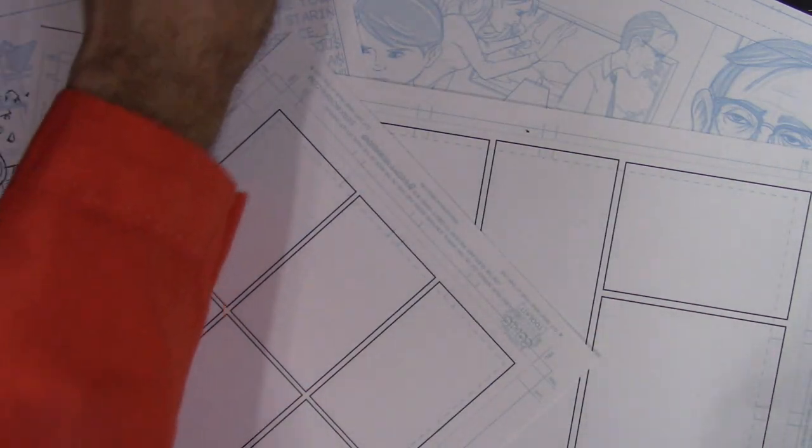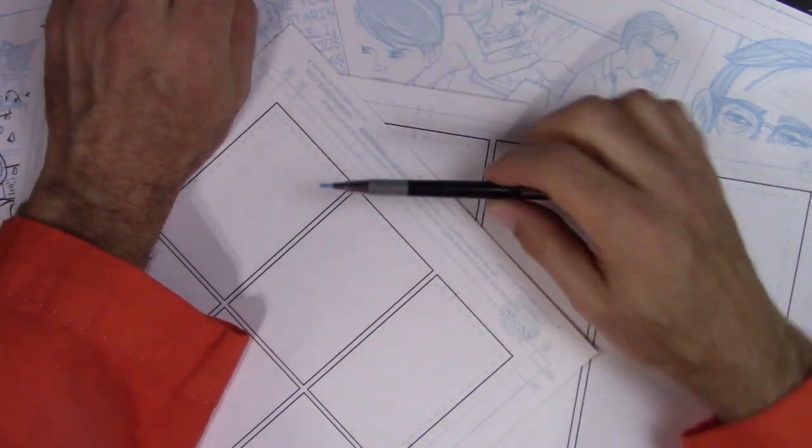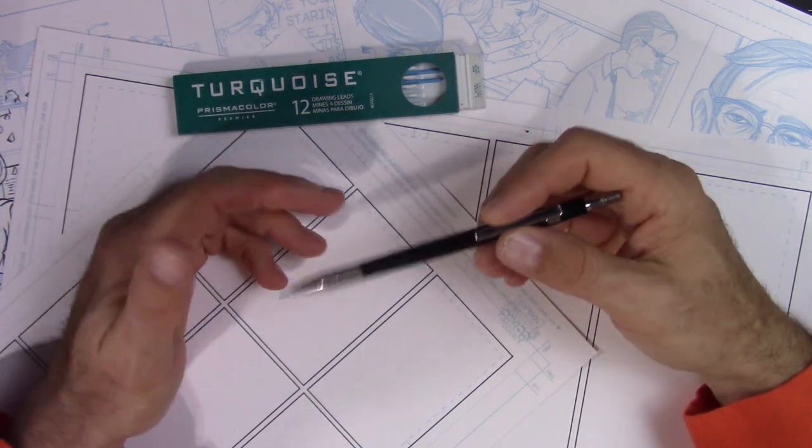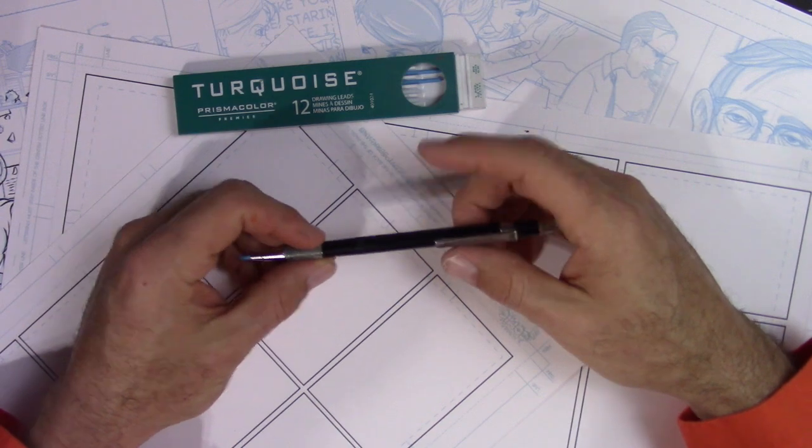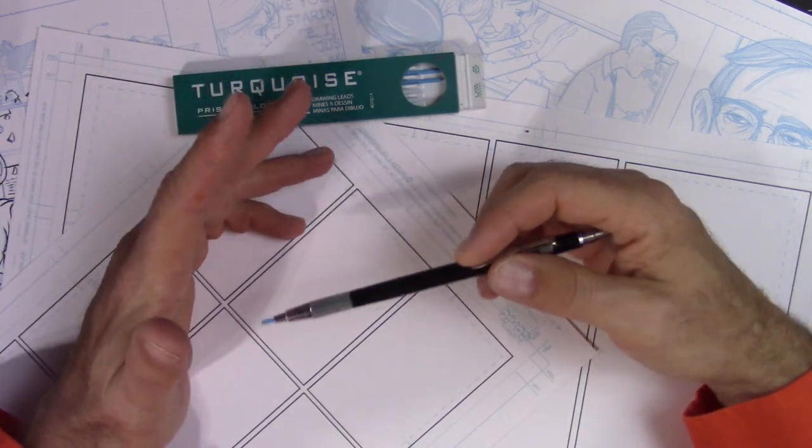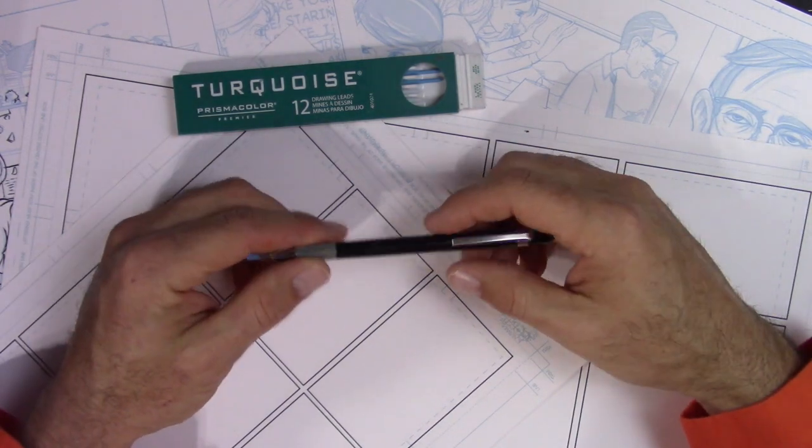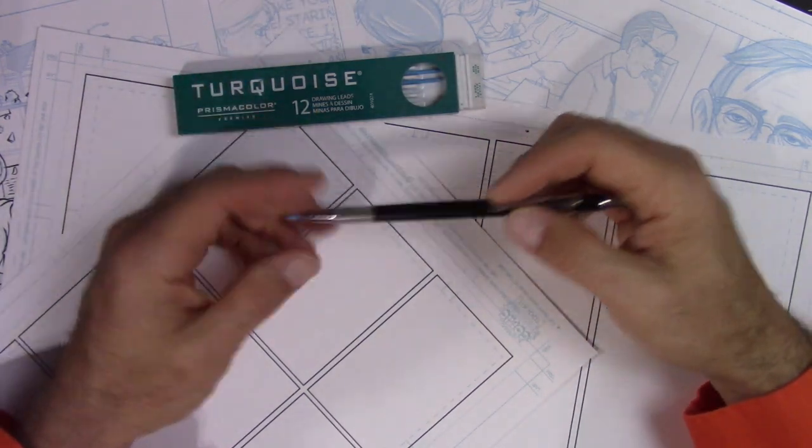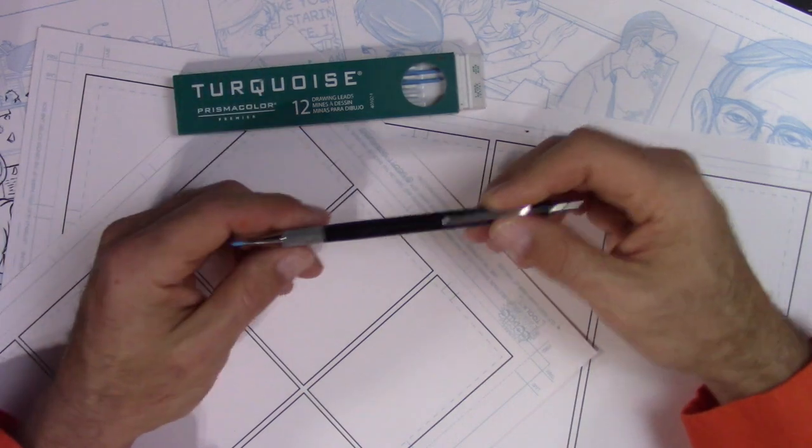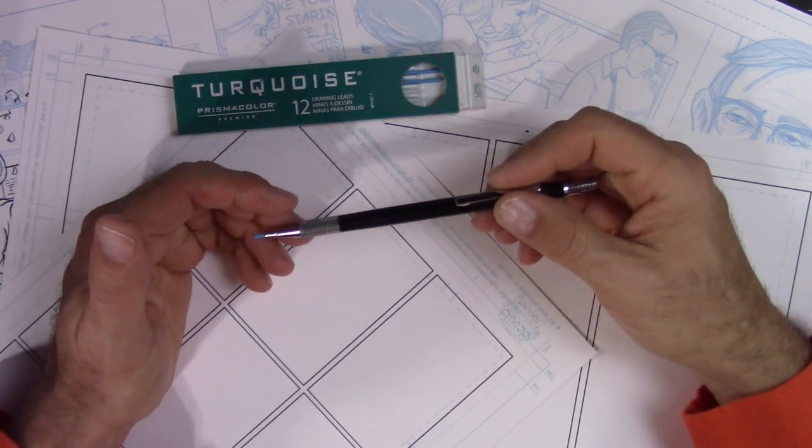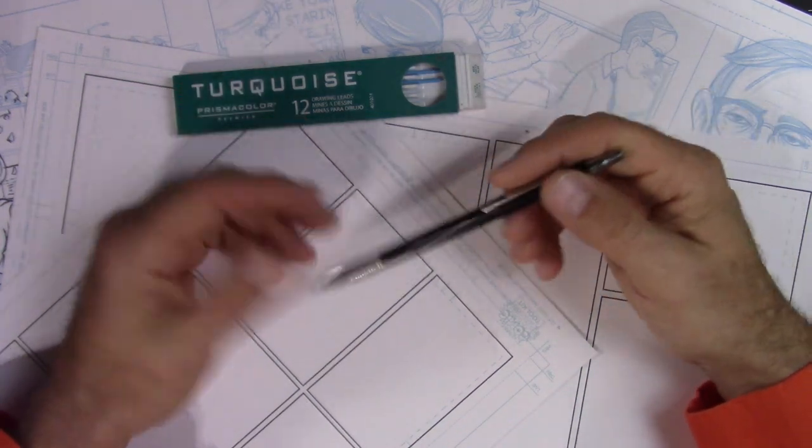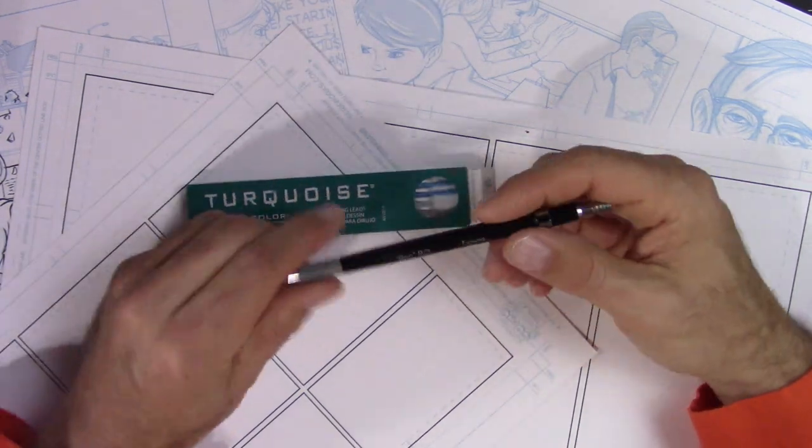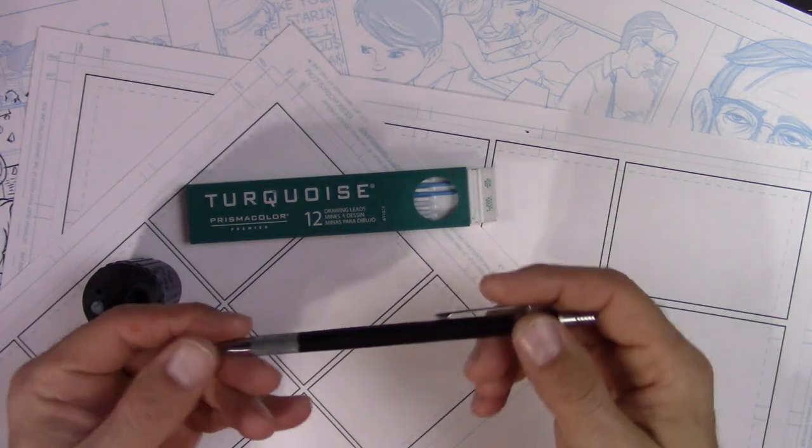When I actually get into drawing my comics analog, I use what is called a lead holder. I'm kind of surprised I found a lot of other artists use these. My first art job ever was working at an architectural firm. That was a long time ago, even before computer-aided drafting CAD. They did a lot of those sketches traditionally back then and these are the tools that they used.